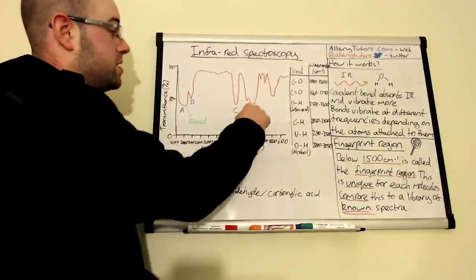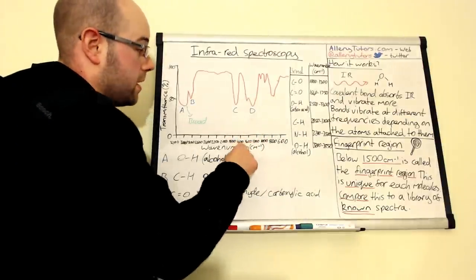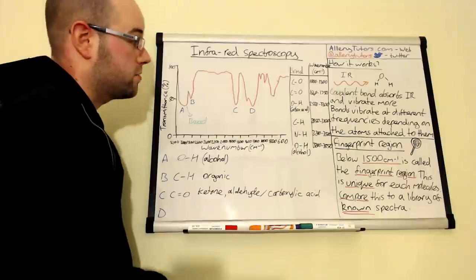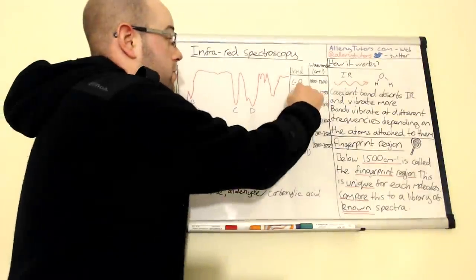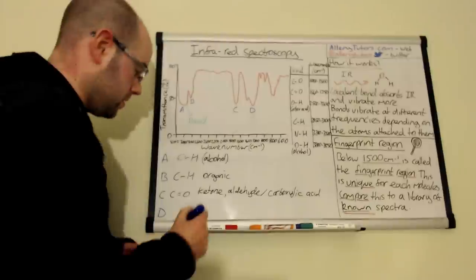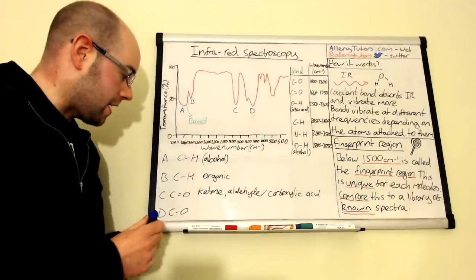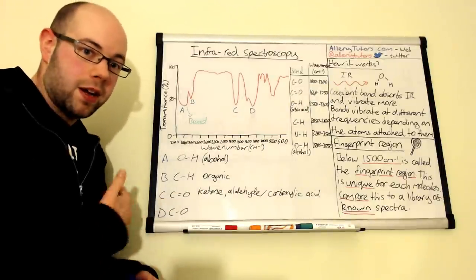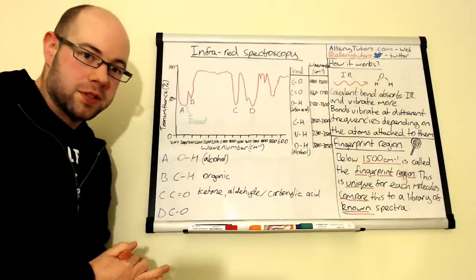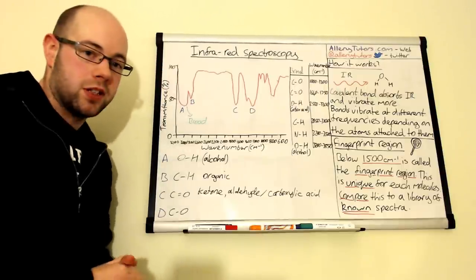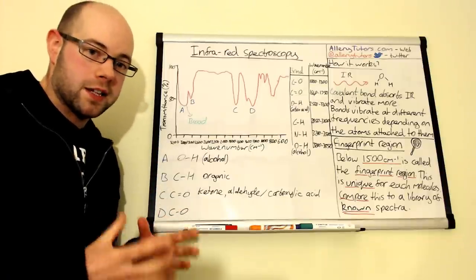Okay, and the last one which is D. Now D is a quite wide peak as well at about 1300 or 1400. Now this 1300 mark would signify a CO bond. So this molecule also has this in there as well. Now again this could mean anything. This could be an ether and it can also signify an ester perhaps as well. It doesn't really tell us a lot but what it does tell us is that the molecule does have these bonds in here and that's the good thing with infrared.